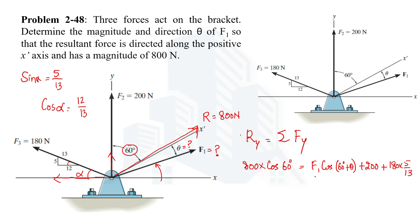Keeping F1 cos(60° + theta) on one side since it contains the unknown variables: the other two positive terms shift to the other side and become negative. On simplification, we get 130.769. Let's call this equation number two.